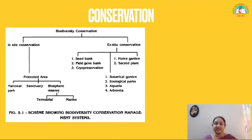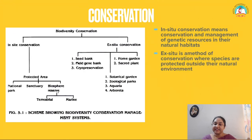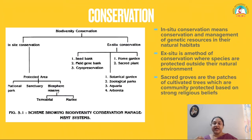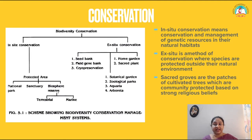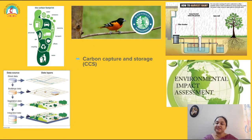We then learned about conservation. Biodiversity conservation includes in-situ conservation and ex-situ conservation. In-situ conservation means conservation and management of genetic resources in their natural habitats. Ex-situ conservation is a method where species are protected outside their natural environment. We then discussed carbon capture and storage — a technology for capturing carbon dioxide and injecting it deep into underground rocks at a depth of one kilometer or more.